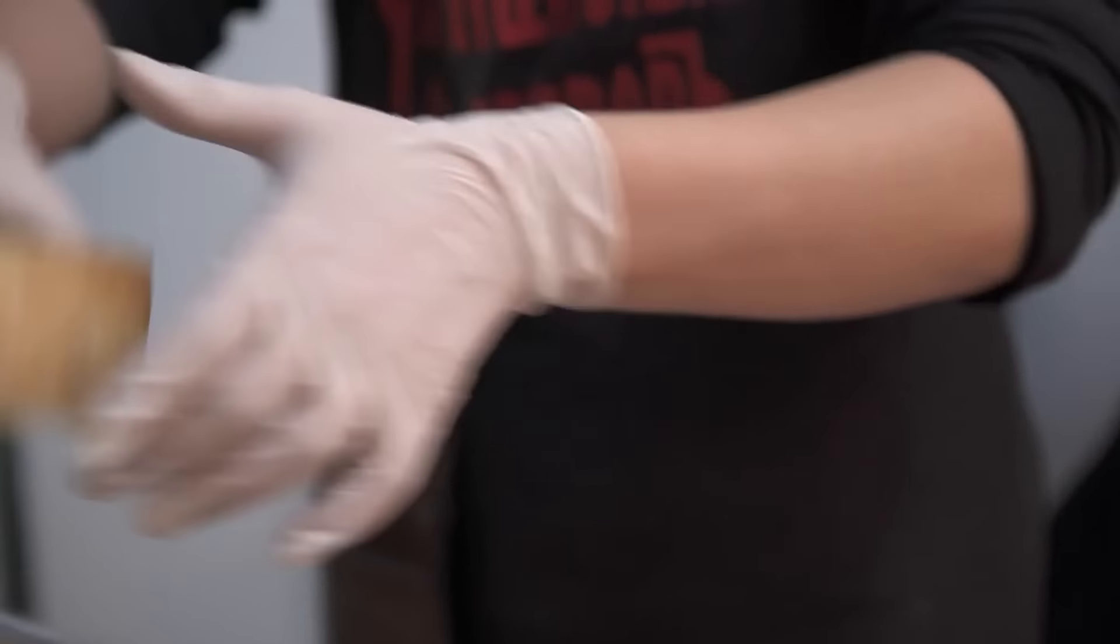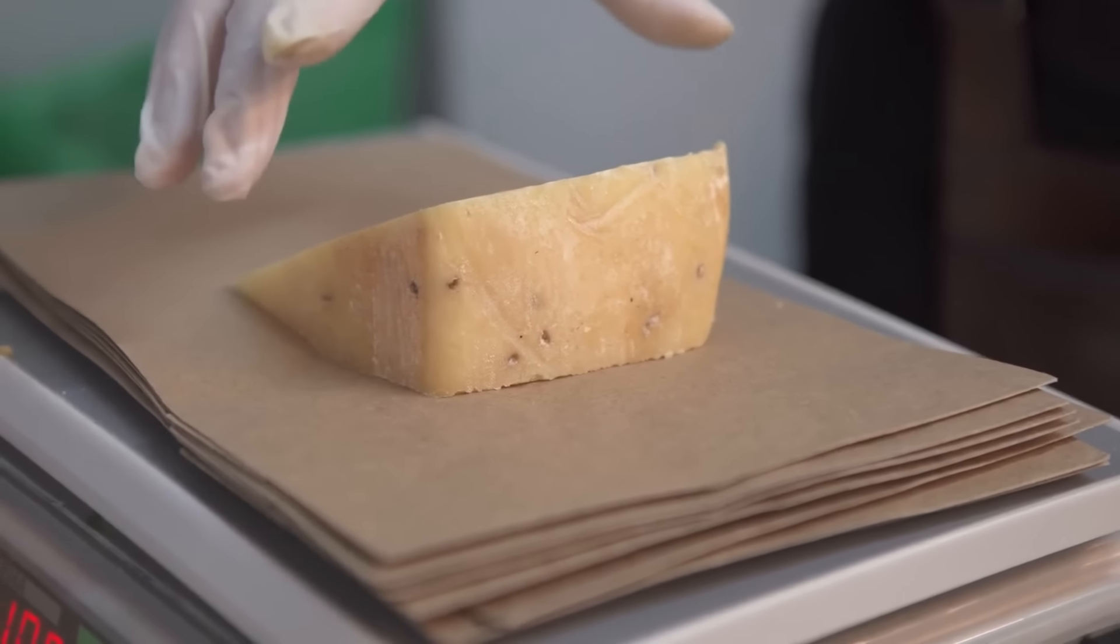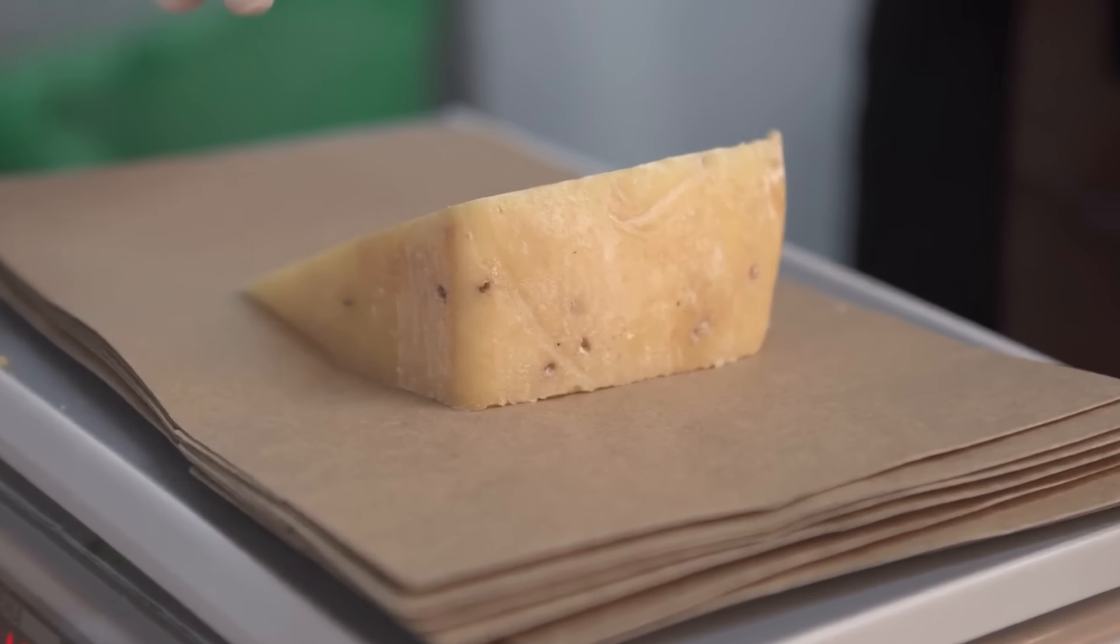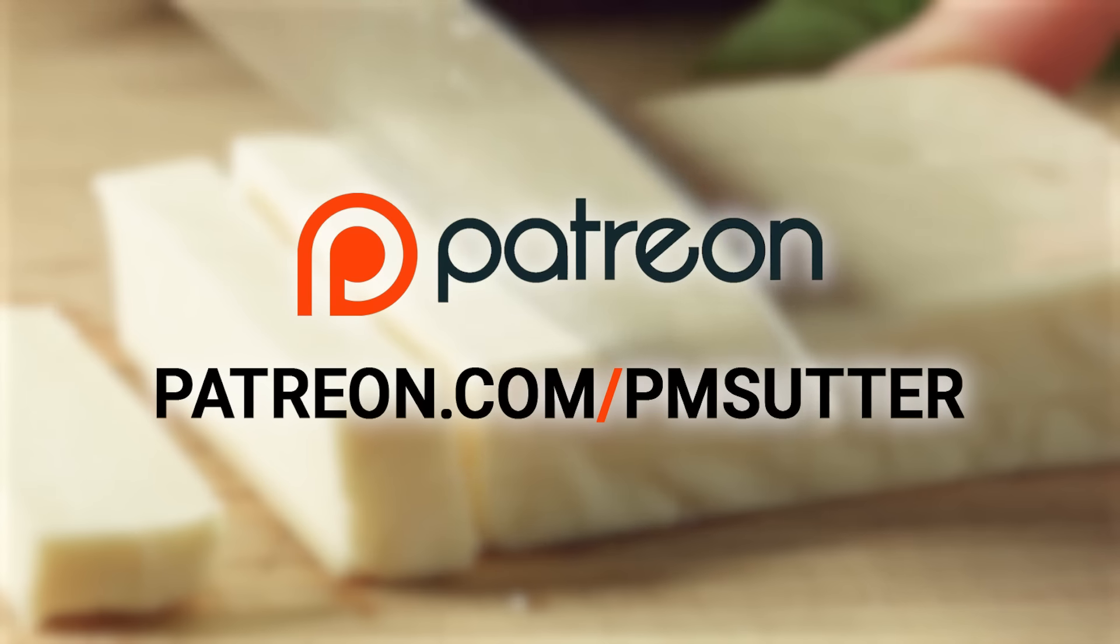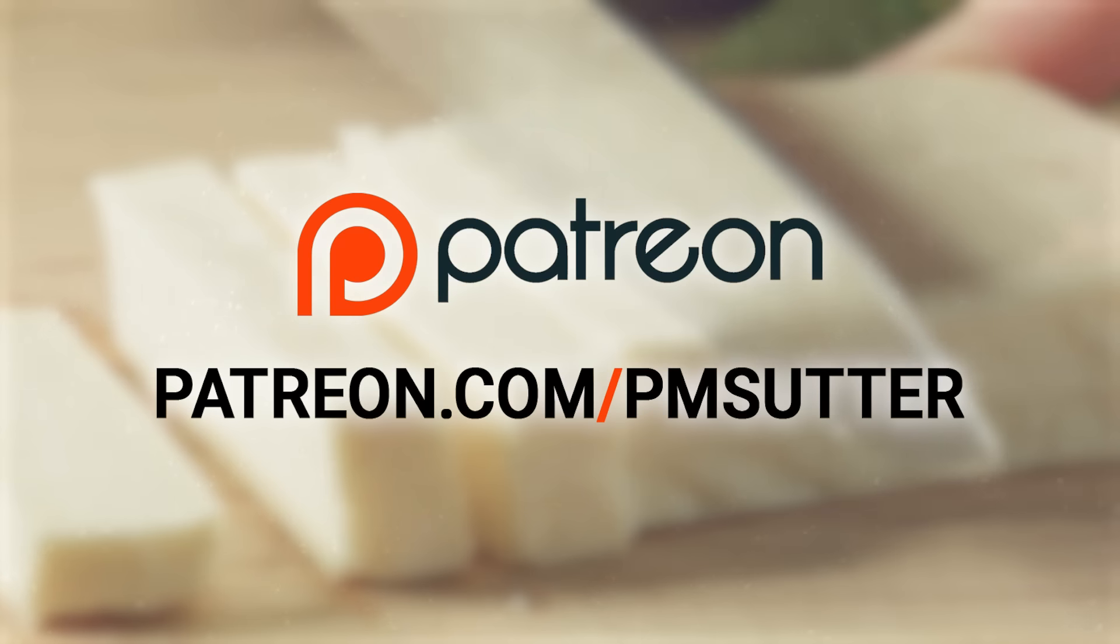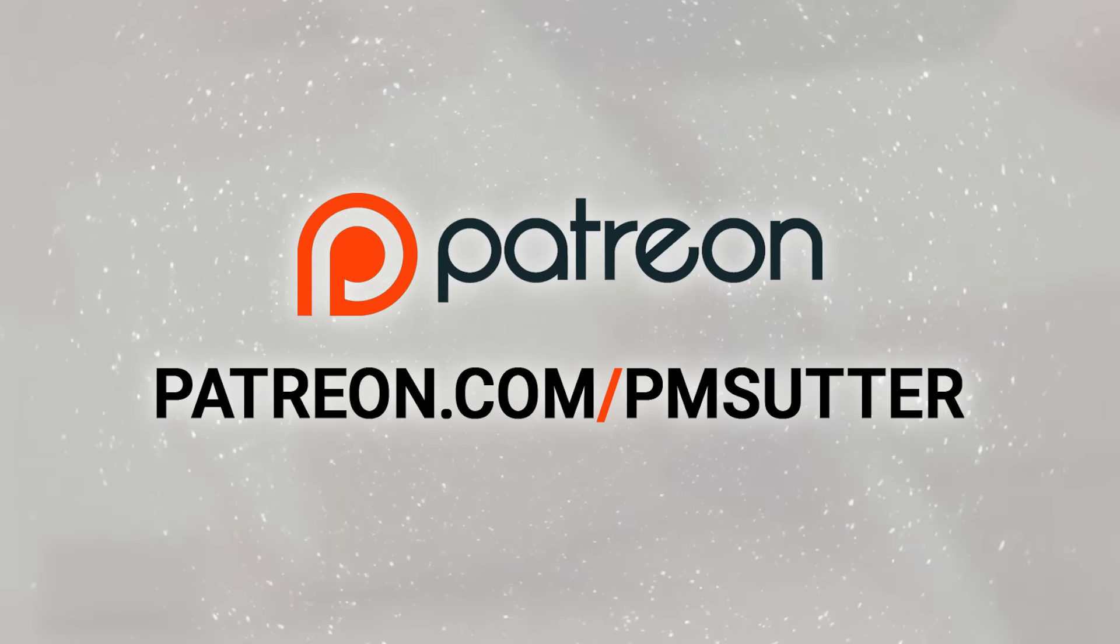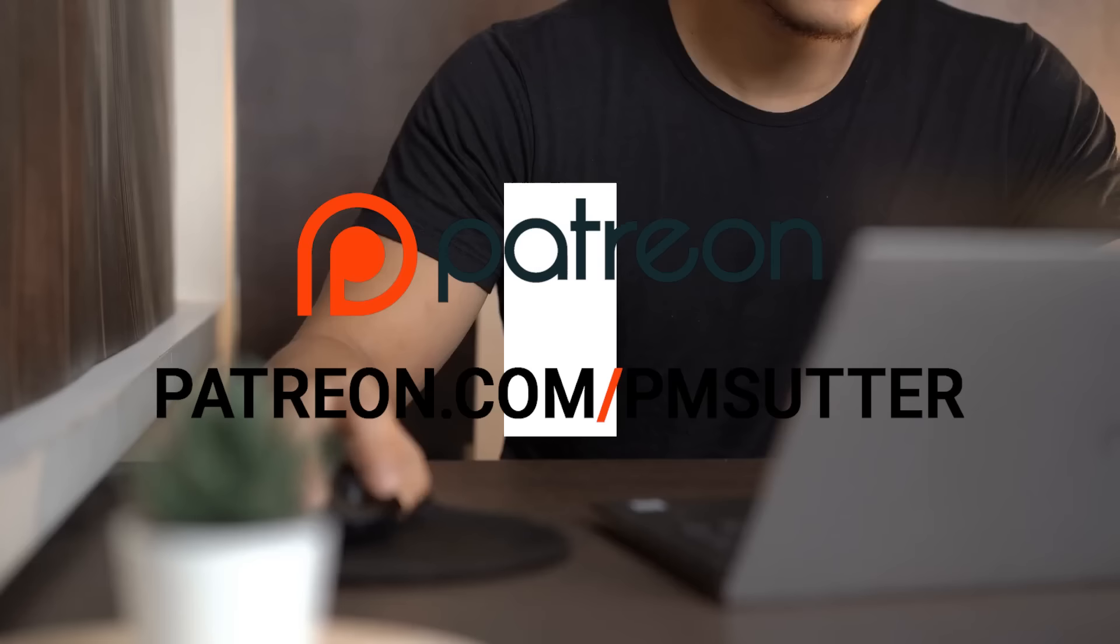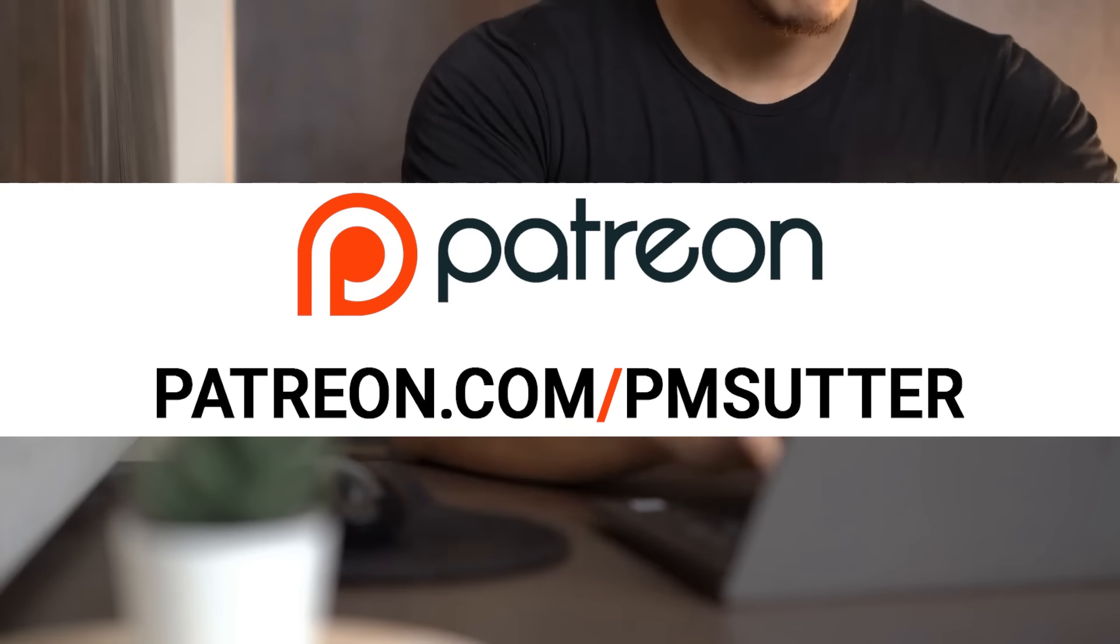We can start with incredibly basic building blocks, the subatomic particles themselves, specifically protons and neutrons. And from there, we can build these elements. Seemingly simple everyday items are astoundingly complex. Take, for example, a piece of cheese. Cheese is roughly one third water, one third protein, a small percentage of carbohydrates, a small percentage of Patreon—that's patreon.com/pmsutter—and another small percentage of minerals.